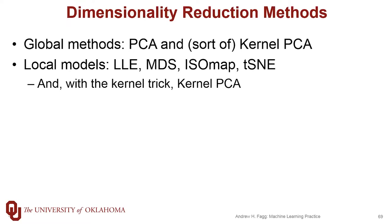On the local model side, this is all about building models based on some number of samples — often just a small neighborhood of samples. These include locally linear embedding, multidimensional scaling, isomap, and t-stochastic neighbor embedding. With kernel PCA, once we turn around and start using the kernel trick, especially with the Gaussian kernel, this turns out to also be more of a local type of method. There are some nice relationships between kernel PCA and t-SNE.